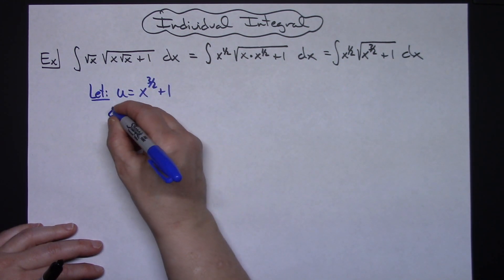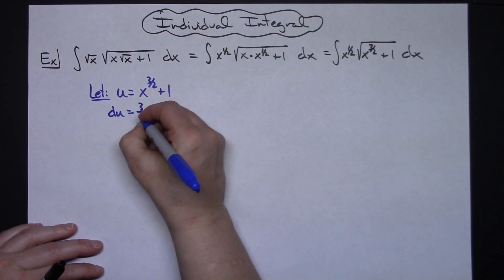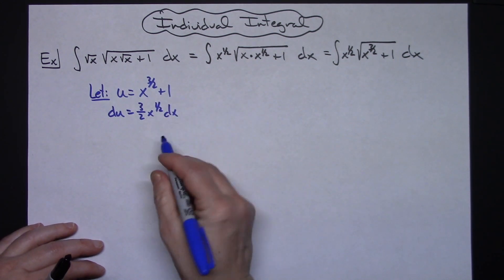I'm going to take the derivative of both sides so du. Derivative there is going to be a 3 halves x to the 1 half and then dx.